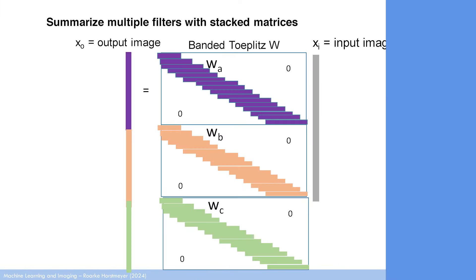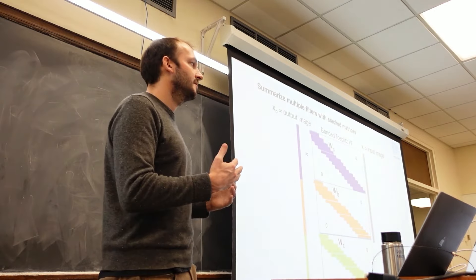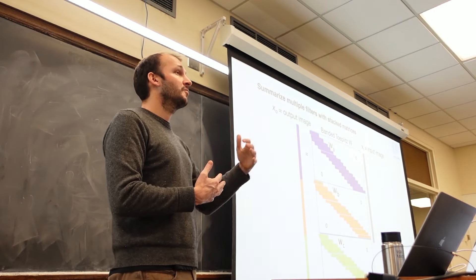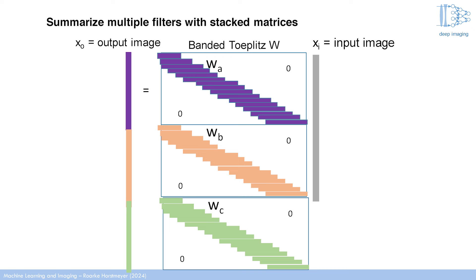This idea of creating multiple channels on the output is just an extra linear operation — you're not doing anything crazy mathematically. The concept of taking an image and performing multiple convolutions with different filters is summarized with a matrix equation. Graphically, it's a stacked series of matrices: a single input goes through a large tall matrix and produces an enlarged output that can be separated into different components.